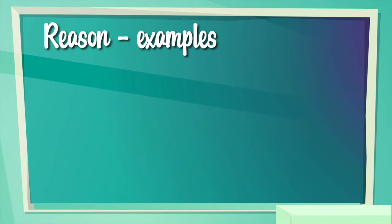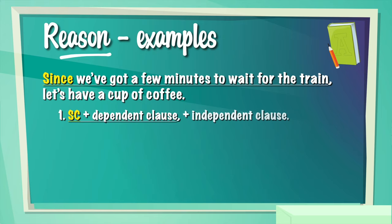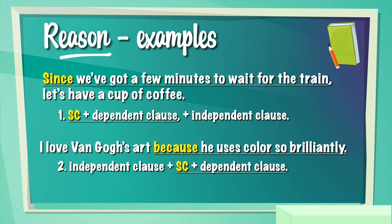Let's look at some examples from the reason category. 'Since we've got a few minutes to wait for the train, let's have a cup of coffee.' You can see the subordinating conjunction right before the dependent clause, then a comma, then the independent clause. Another example: 'I love Van Gogh's art because he uses color so brilliantly.' Here we have the independent clause, then the subordinating conjunction, then the dependent clause.